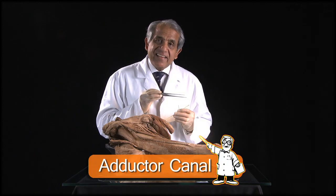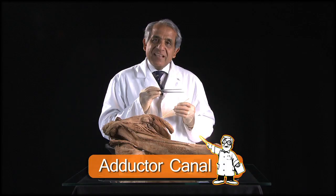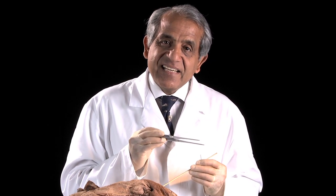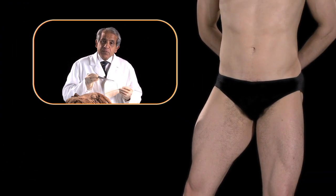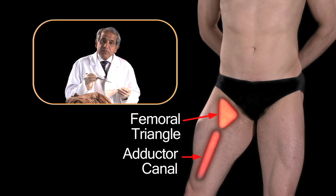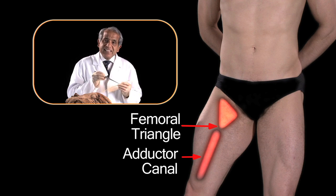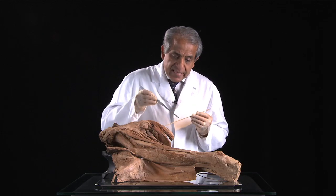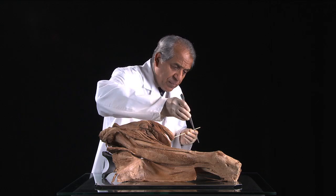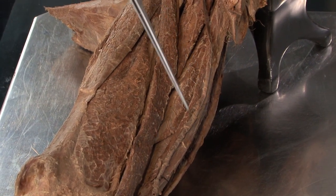Now let's look at another interesting intermuscular space in the thigh. This one's called the adductor canal. Proximally, it is continuous with the femoral triangle — at the apex of the femoral triangle, the femoral triangle becomes continuous with the adductor canal. The adductor canal occupies the medial aspect of the distal two-thirds of the thigh.